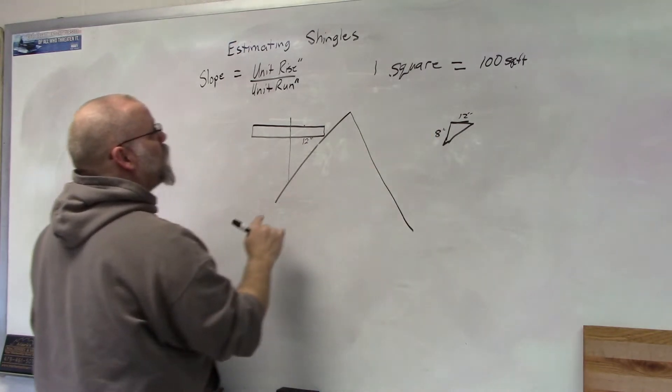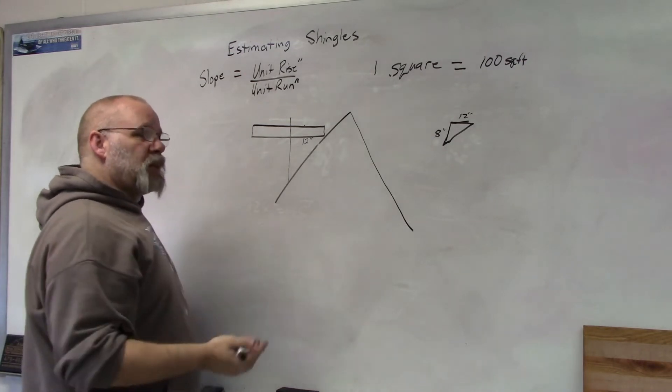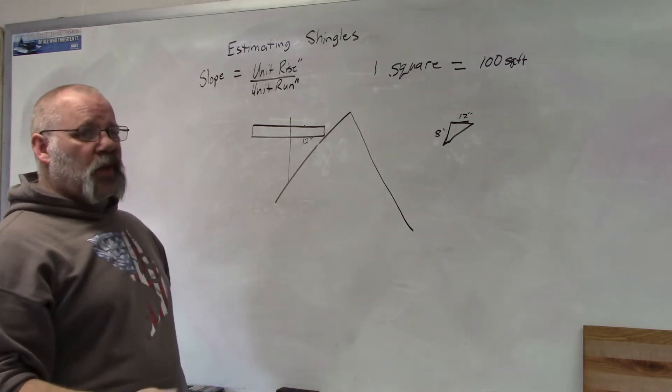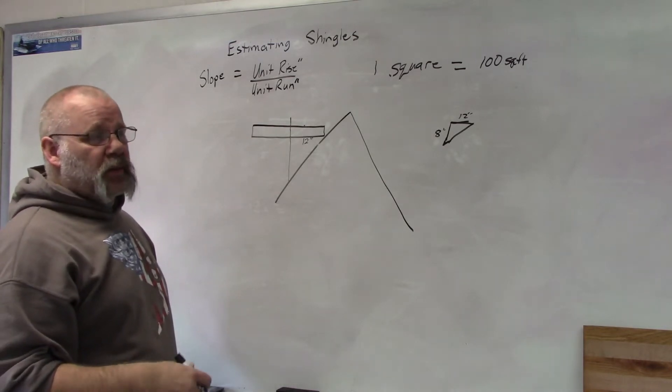If you have an existing house and you're not exactly sure what the slope is - maybe you think it's a 5, maybe a 6, or maybe it's a 5.5 - how do you figure it out?